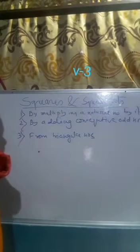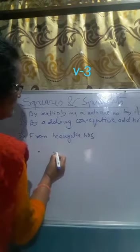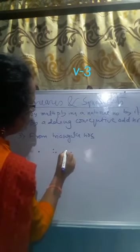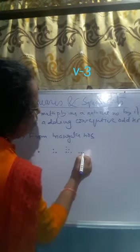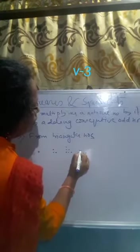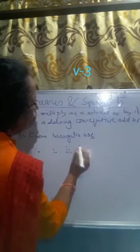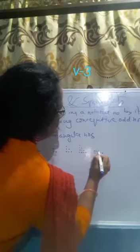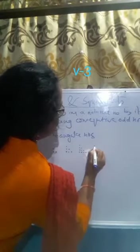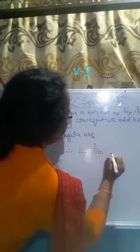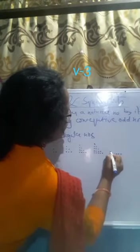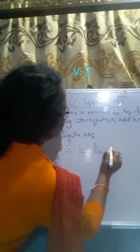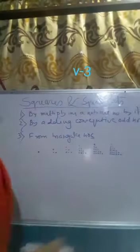The first triangular number has 1 ball arranged in a triangle. The second triangular number has balls arranged with rows of 3, 2, 1. The third triangular number has rows of 4, 3, 2, 1. The fourth has rows 5, 4, 3, 2, 1. And the fifth has rows 6, 5, 4, 3, 2, 1. These arrangements of balls in triangular form are called triangular numbers.